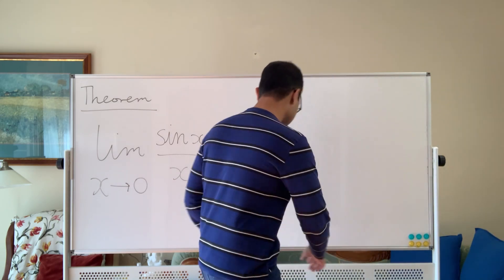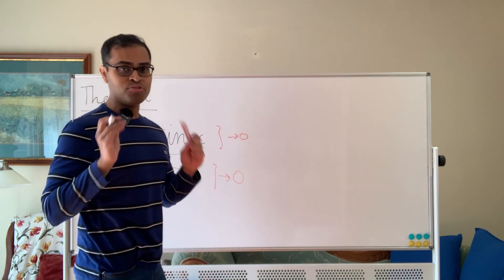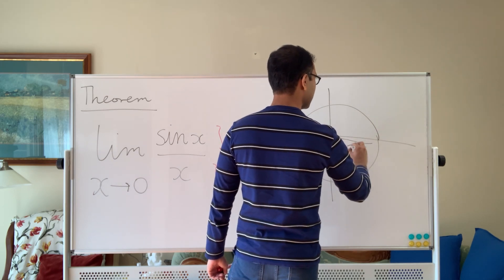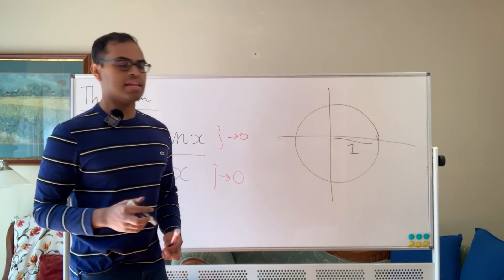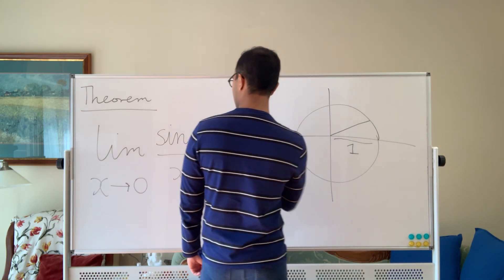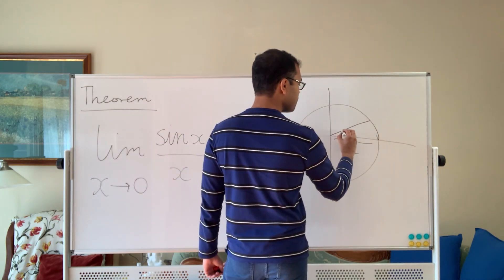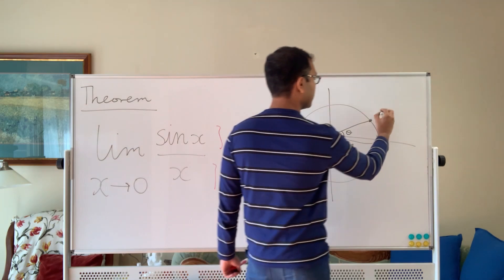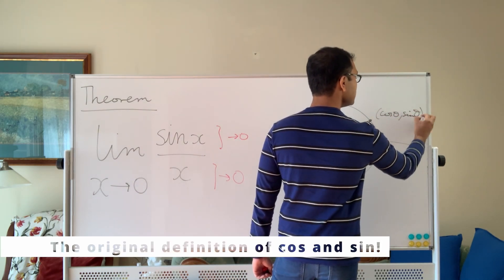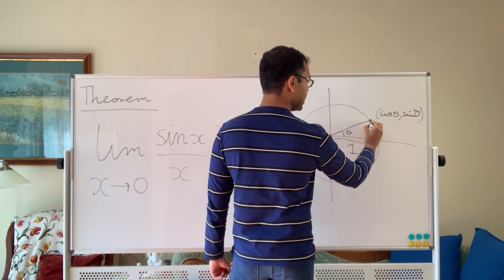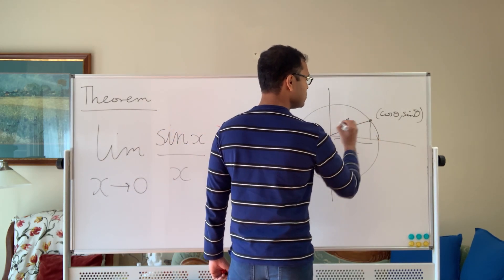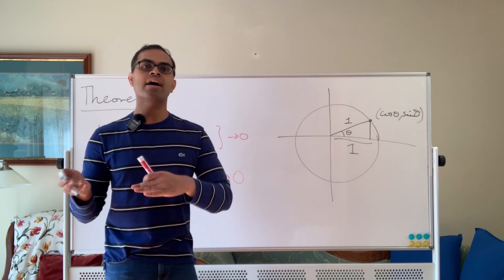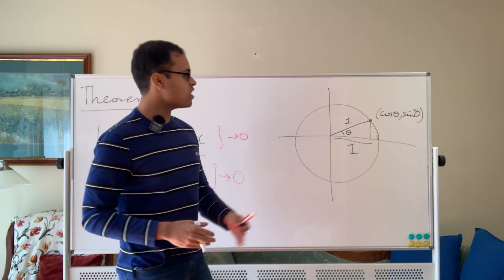Here's going to be a really beautiful picture for understanding this. What we're going to do is draw a circle with radius 1, and we're going to remember the definition of sine theta. If I have an angle of theta — and here theta is approaching 0 — then the point on the unit circle has x and y coordinates cosine theta and sine theta. That is the definition of sine and cosine. Because the hypotenuse is 1, the base and the height are cosine theta and sine theta.